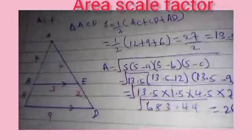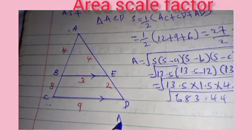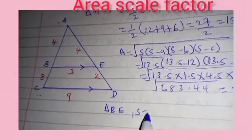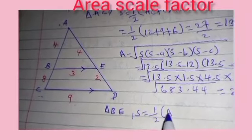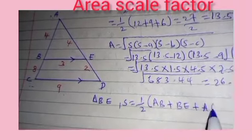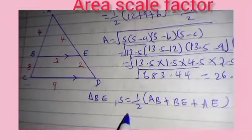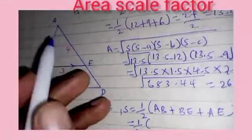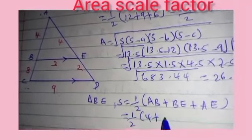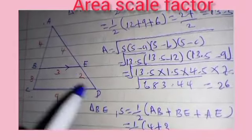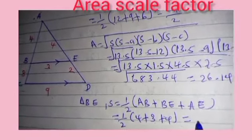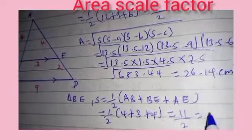Next we consider triangle ABE. We get S there, which is given by half of (AB plus BE plus AE). Simplifying: AB is 4, BE is 3, and AE is 4, giving 4 plus 3 plus 4 equals 11, over 2, which is equal to 5.5.